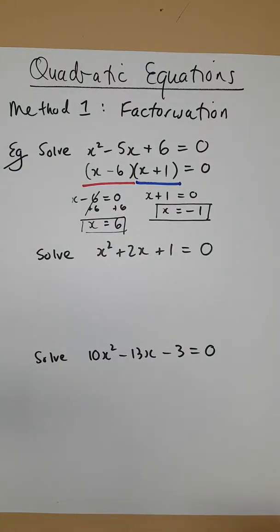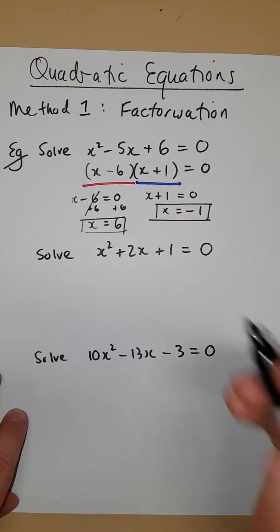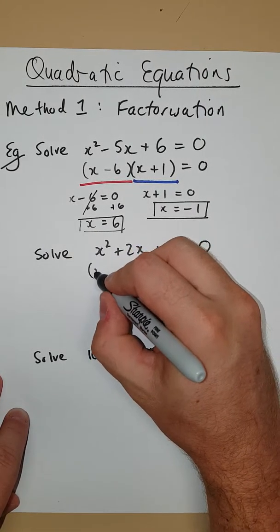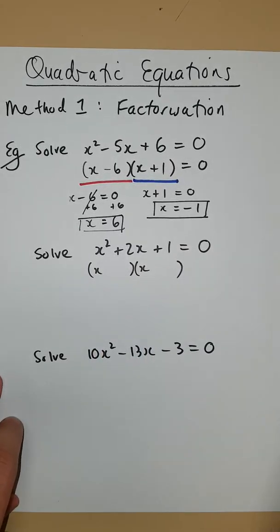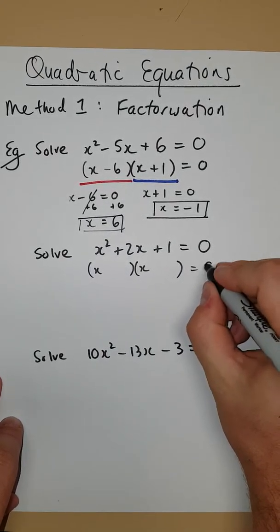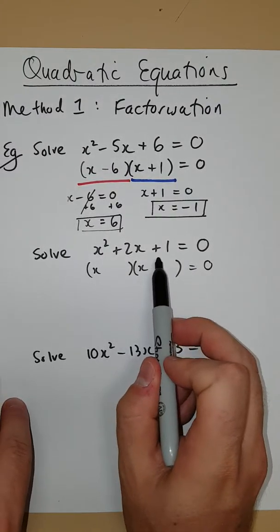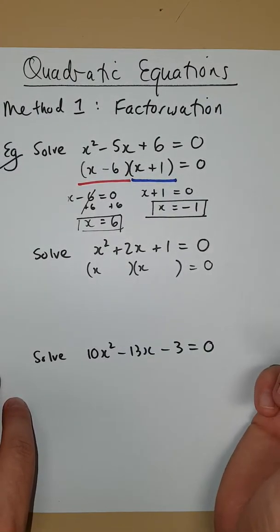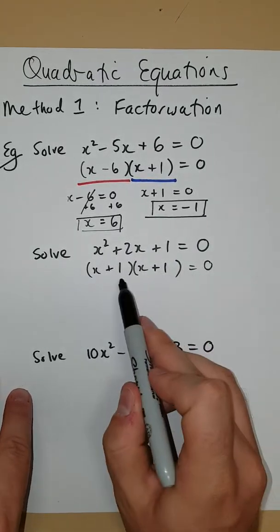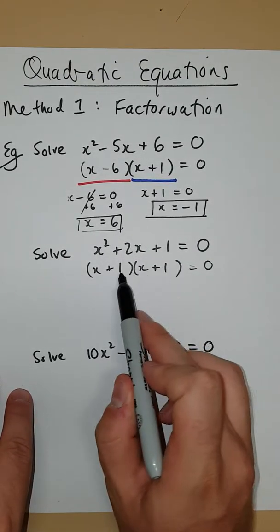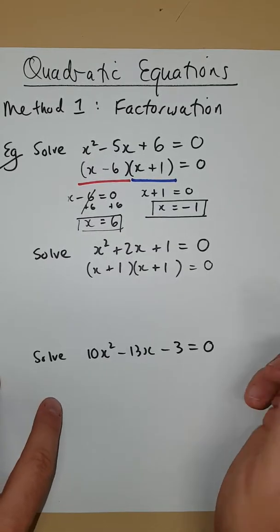Alright, question 2. Again, we need to factorize, so we need to set this thing up in brackets like this. Again, it's monic. Alright, so we can set up our brackets in the very simple case. Two numbers that times to give 1 that add to give 2. Now, that's just 1 and 1. Alright, 1 times 1 is equal to 1. 1 plus 1 is equal to 2.